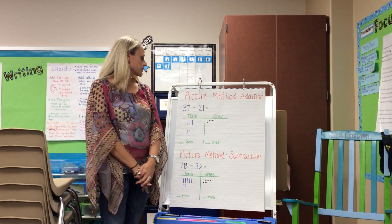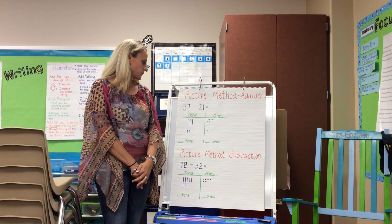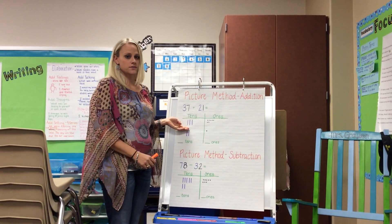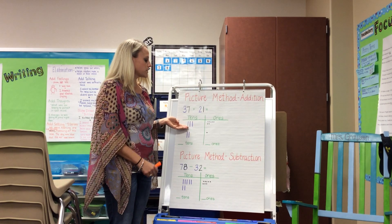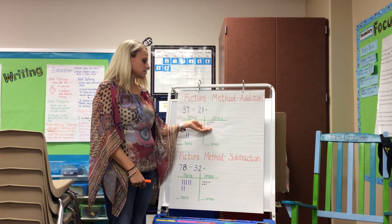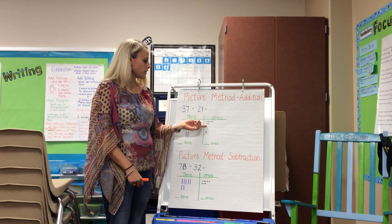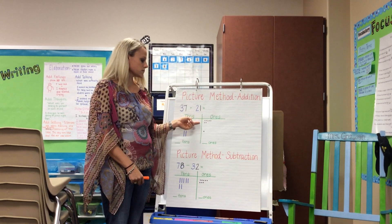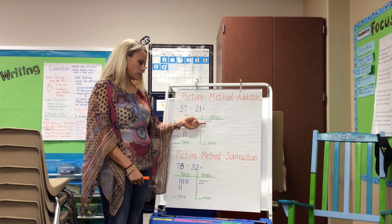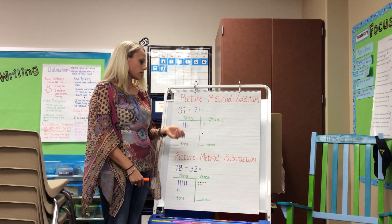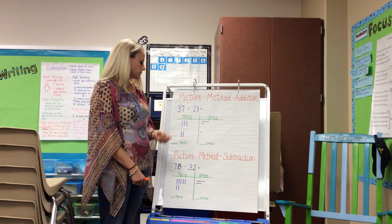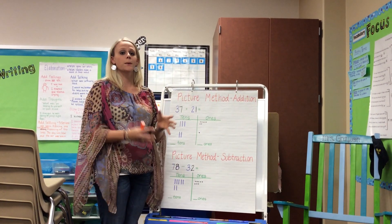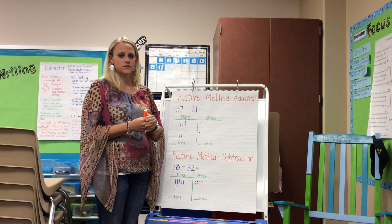So in this problem, 37 plus 21, the kids would be required to draw 37 with three tens and seven ones. I draw the ones in a ten frame, five across the top and five on the bottom, for quick recall, and then the number 21. We show both numbers because they're combining the numbers together.